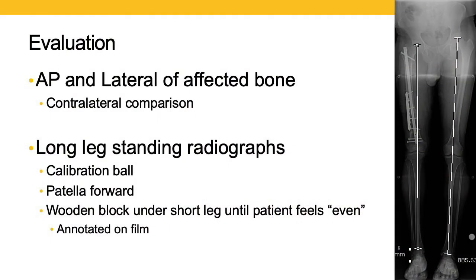In order to understand what's going on when you see a patient who has a post-traumatic limb length discrepancy, you need to start with a standard trauma evaluation — an AP and lateral of the affected bone. It's my practice to recommend getting a contralateral comparison, because that's going to inform you what the patient's unaffected side looks like and what you may be shooting for during a reconstructive surgery. I would also recommend getting long leg standing radiographs. You're going to need some sort of calibration ball or marker, and should really focus on having the patient's patellas pointing forward. Additionally, put a wooden block under the short leg until the patient states they feel even, and have your technician annotate that on the film.